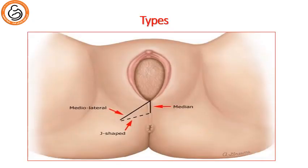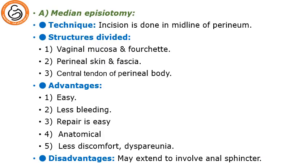Types of episiotomy include the median or midline episiotomy, the mediolateral episiotomy, and J-shaped episiotomy. For the median episiotomy, we incise in the midline of the perineum and the structures divided are the vaginal mucosa and fourchette, the perineal skin and fascia, and the central tendon of the perineal body. The advantages are it is easy with less bleeding and repair is easy; it is more anatomical with less discomfort and less dyspareunia. The disadvantage is it may extend to involve the anal sphincter.